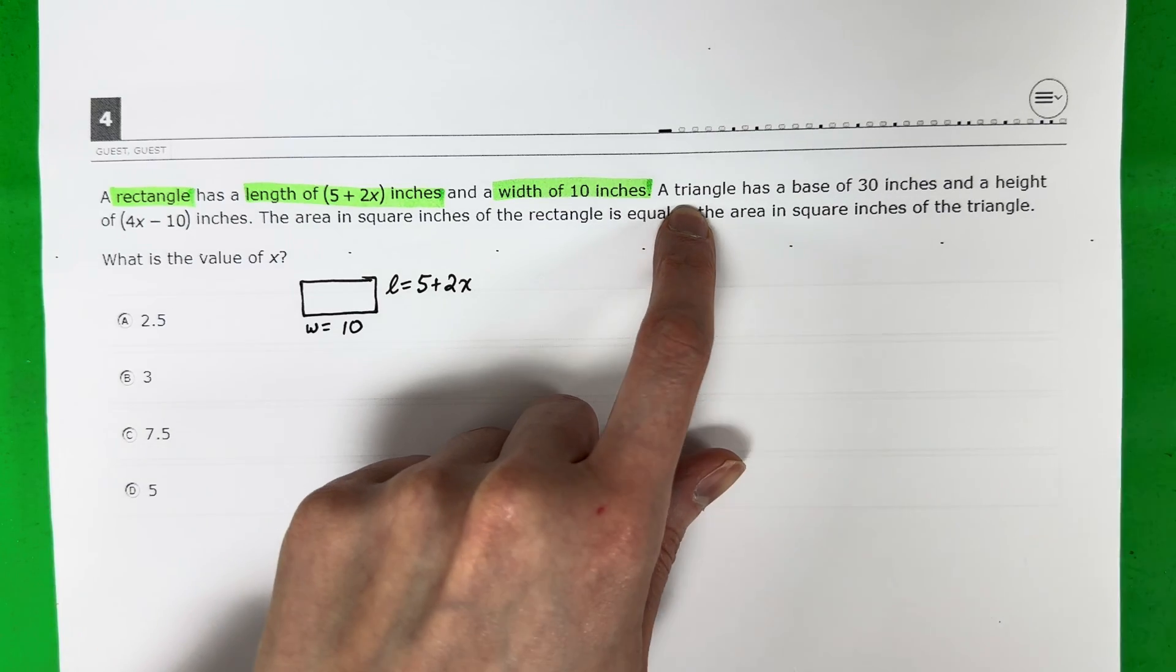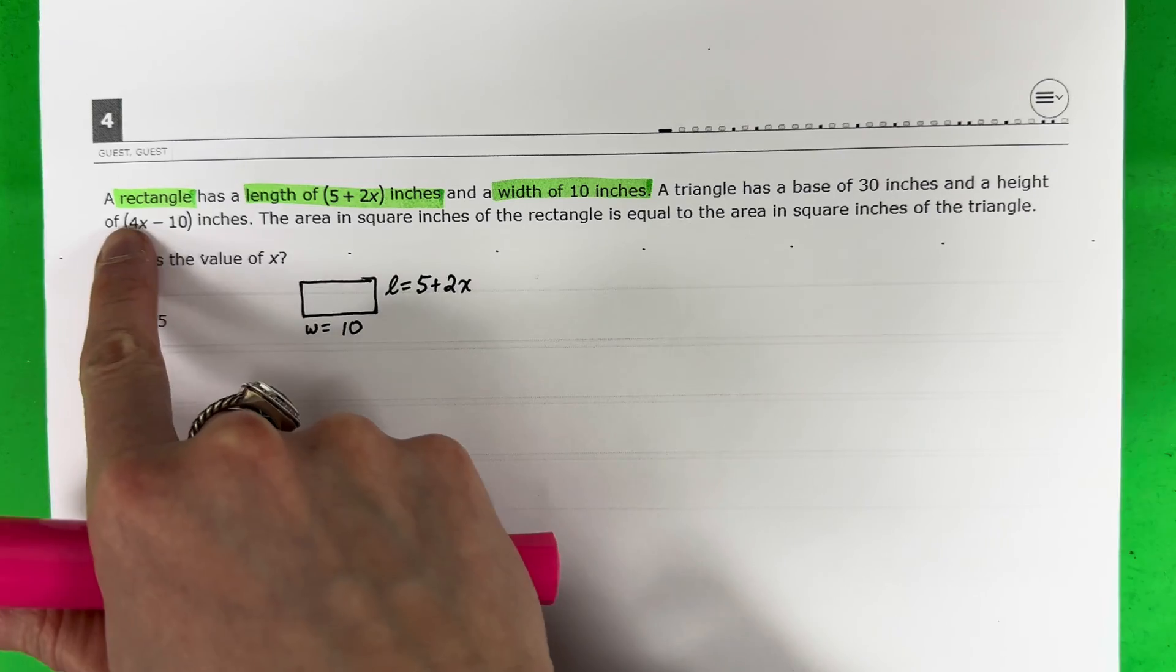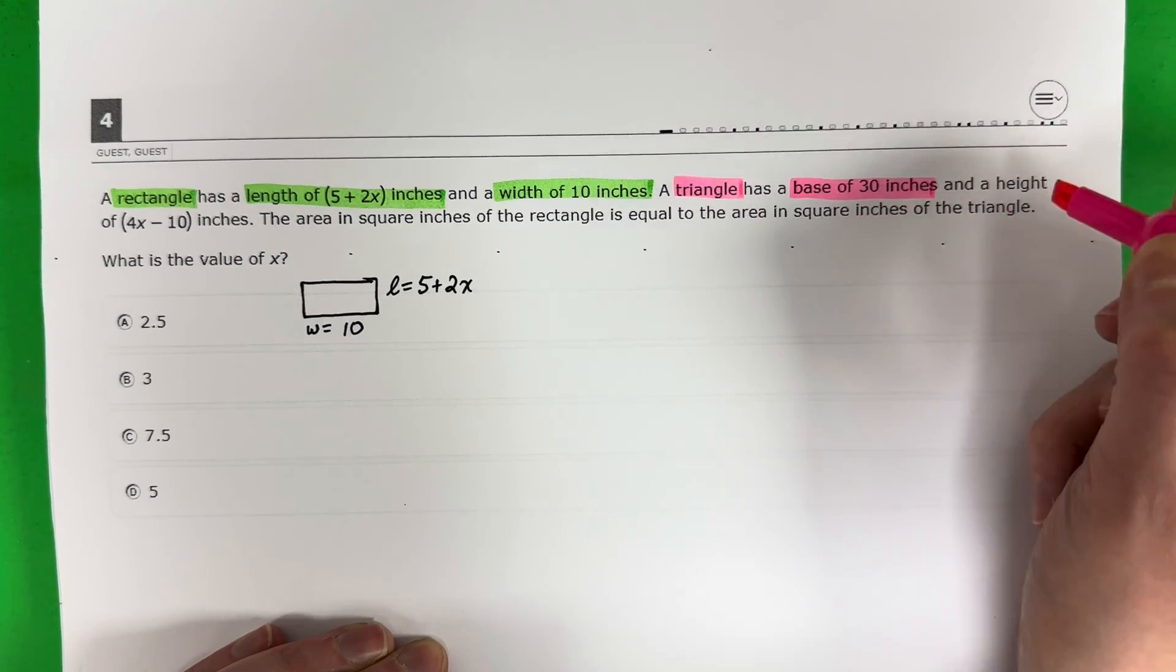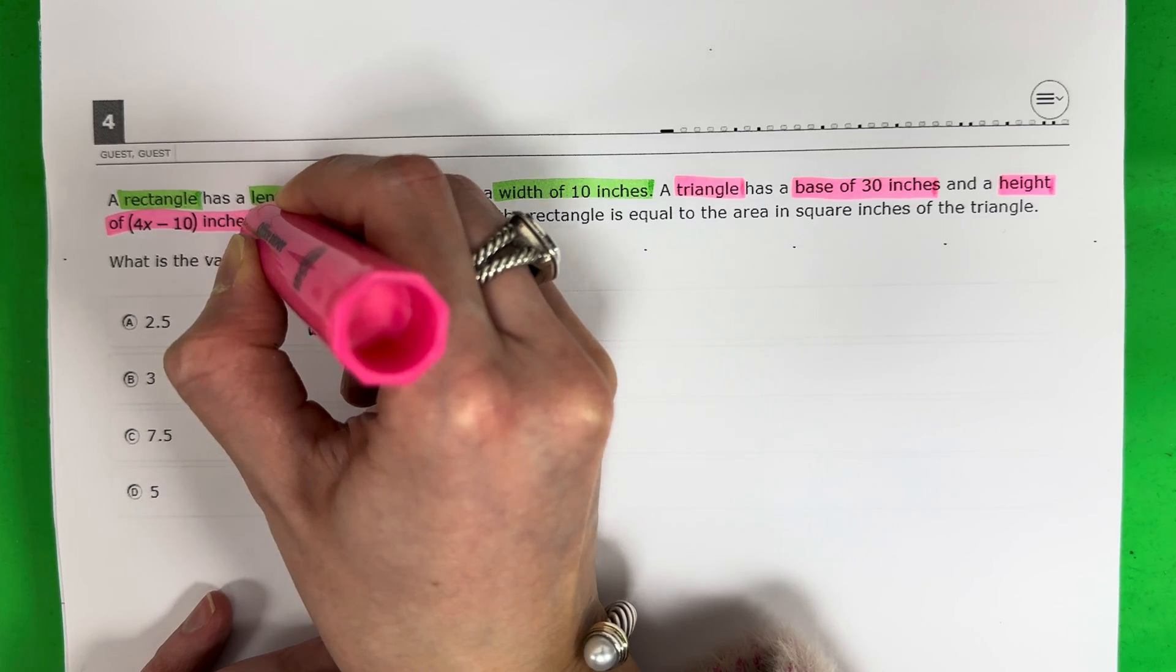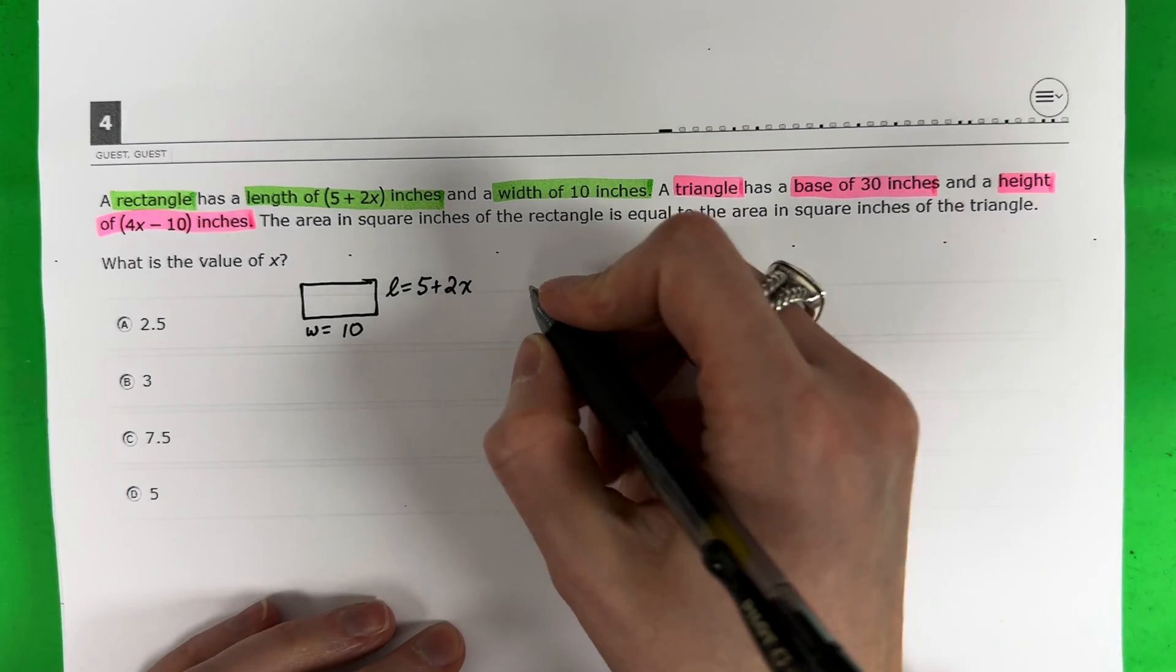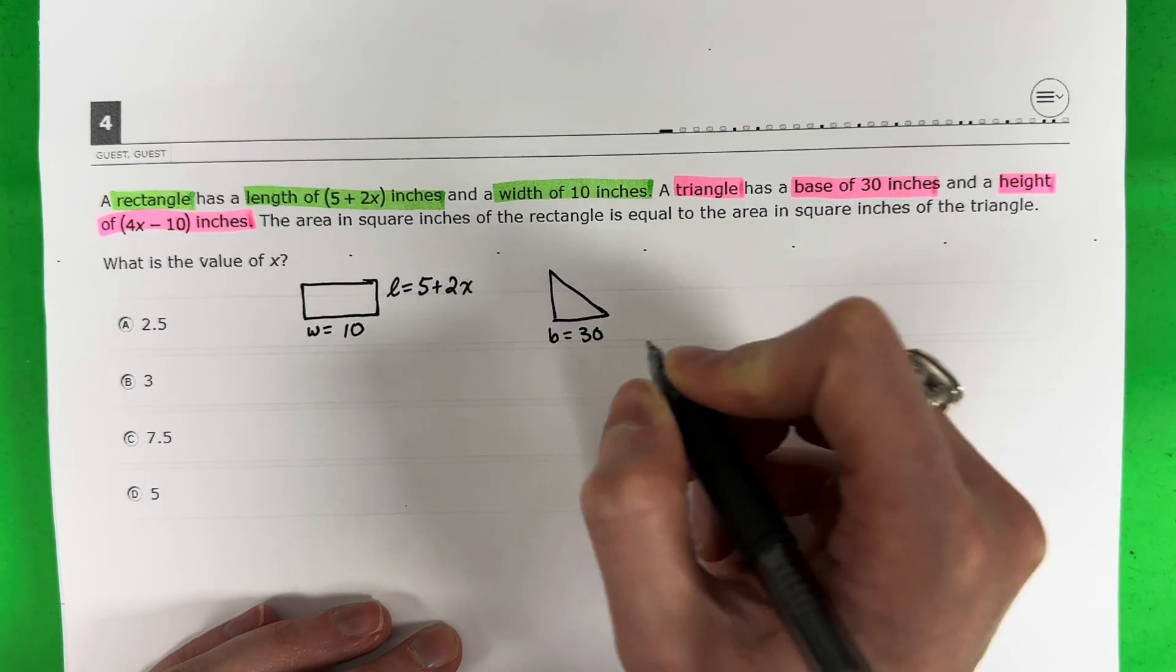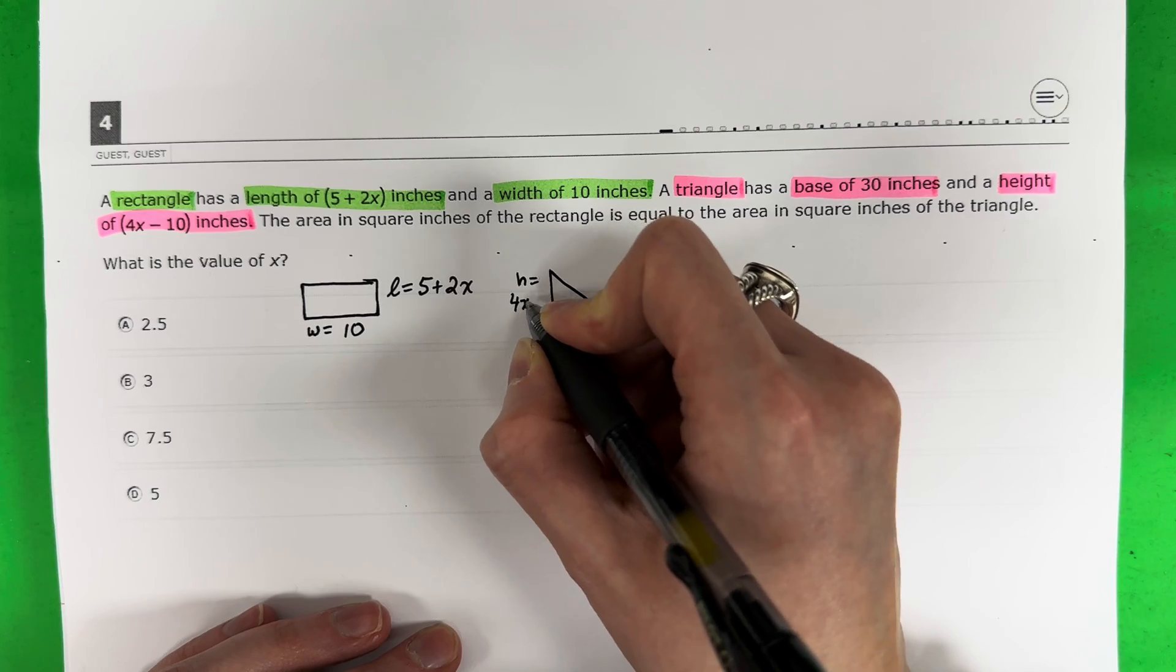Now we're going to continue. A triangle has a base of 30 inches and a height of 4x minus 10 inches. I have another shape, it's a triangle, and I have the base of 30 inches and height of 4x minus 10 inches. Let's go ahead and draw that one. Here's my triangle. The B, the base, which is down here, is 30. And the height, which is right over here, is 4x minus 10.